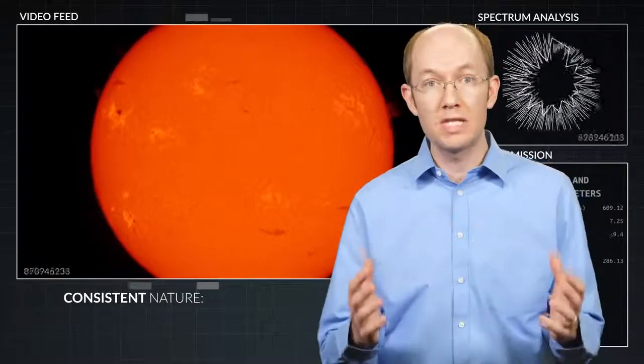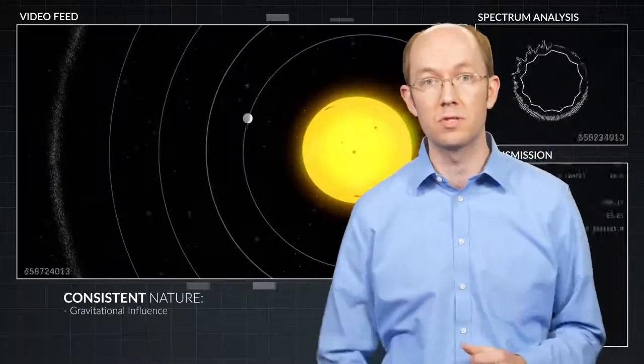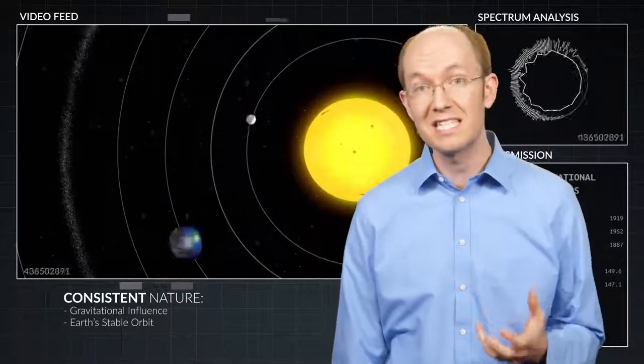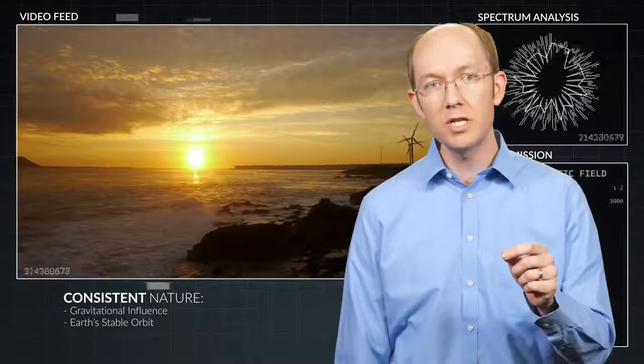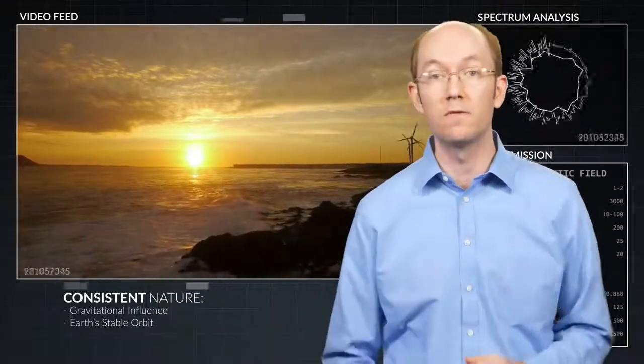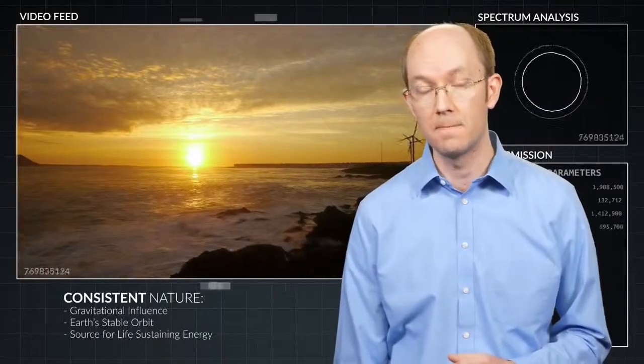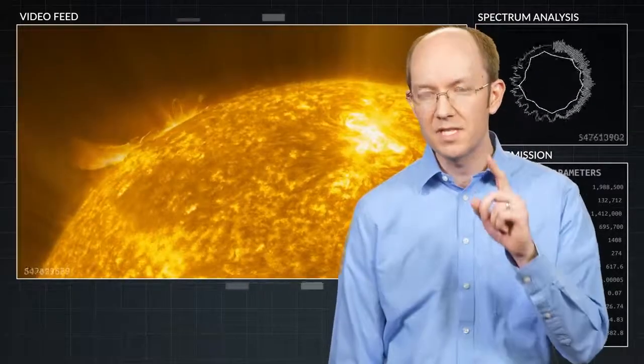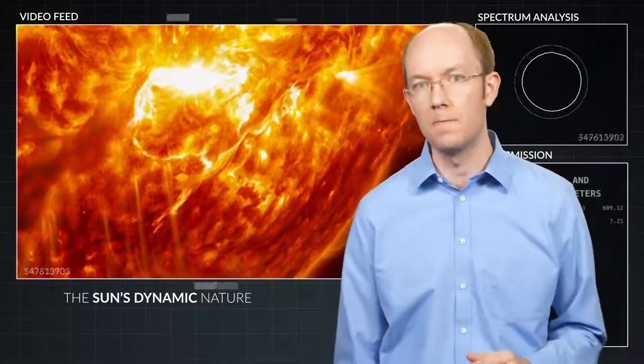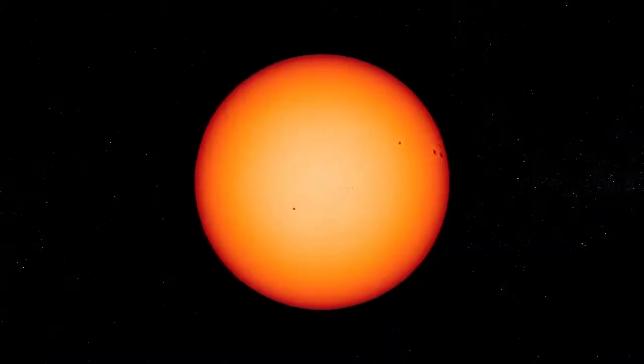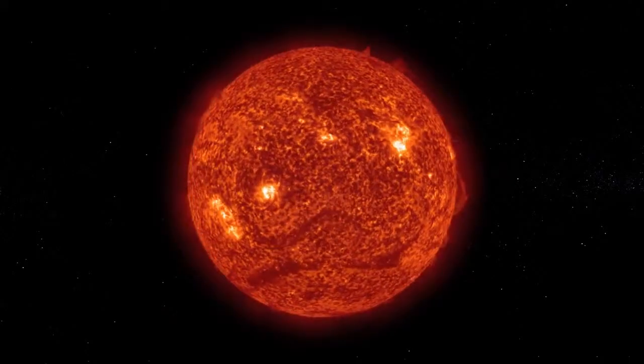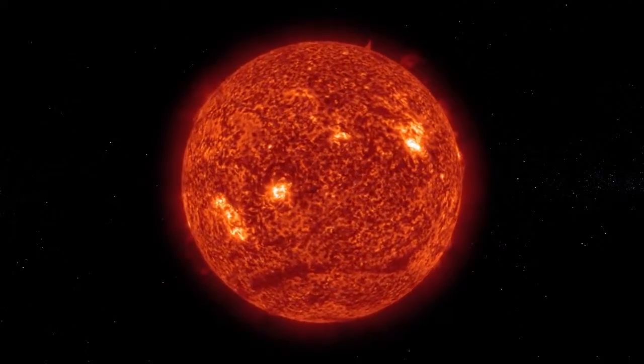Aspects of the Sun's design can be seen in its consistent nature, both in its role as a gravitational anchor for the solar system, including Earth's stable orbit, but also in its role as the constant source of Earth's life-sustaining energy. But the Sun is not silent. It has a dynamic nature as well. And the Sun's dynamic nature provides a view of its complexity and its design.